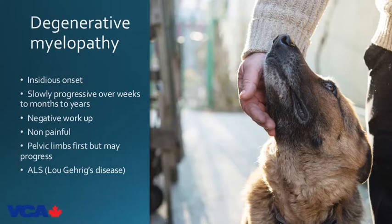Degenerative myelopathy: common in German Shepherd dogs, Boxers, Corgis, Chesapeake Bay Retrievers, Ridgebacks, and others. It has an insidious onset, slowly progressive over weeks to months to sometimes years. It's a diagnosis of exclusion — complete the full workup first. A genetic blood test can be sent to Missouri, though the test is not always accurate, so rule out everything else. Many affected older German Shepherds also have mild thoracolumbar disc compression, making differentiation difficult. Pelvic limbs are usually worse first, but thoracic limbs can be affected with progression. Unfortunately, most of these dogs are eventually euthanized.